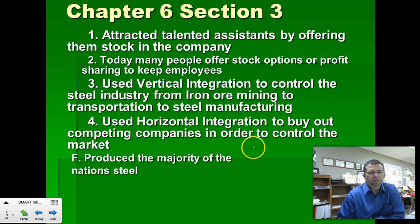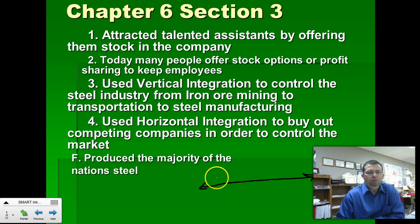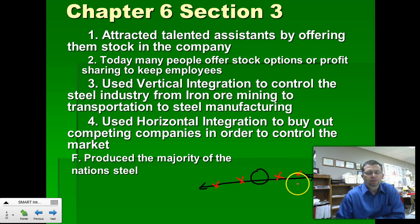Horizontal integration is similar to vertical integration, except horizontal — you go left to right. Horizontal integration is where you buy up companies that are similar to yours. So if you are in the steel industry, you buy up other steel companies. And essentially what you do is eliminate your competition.